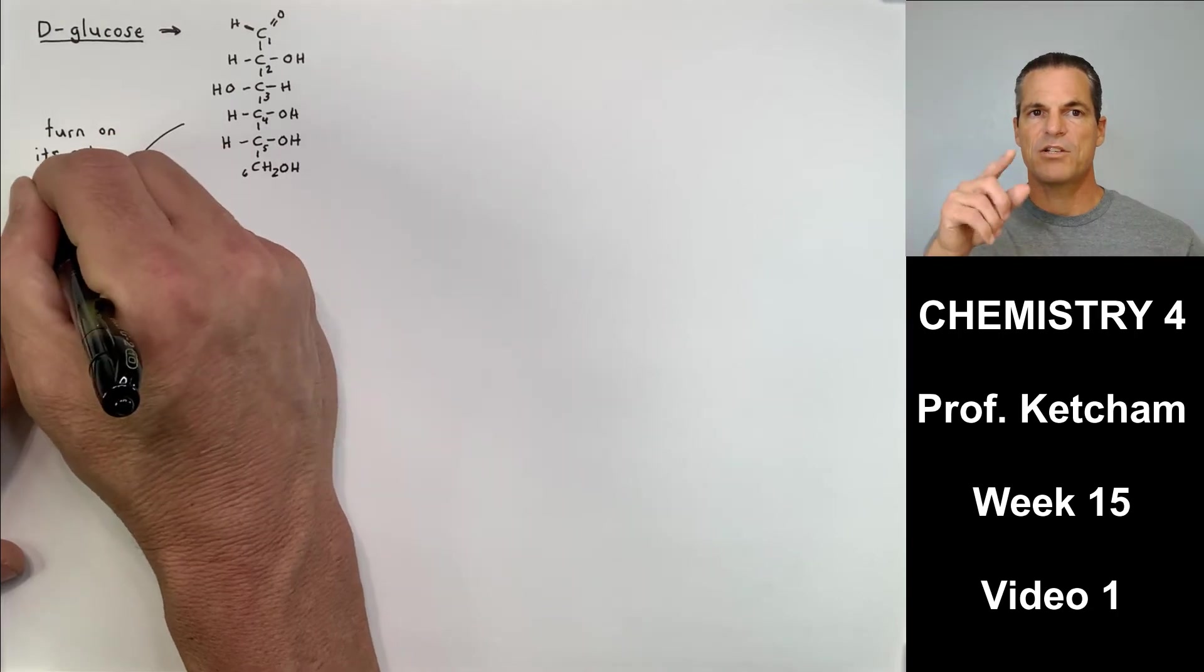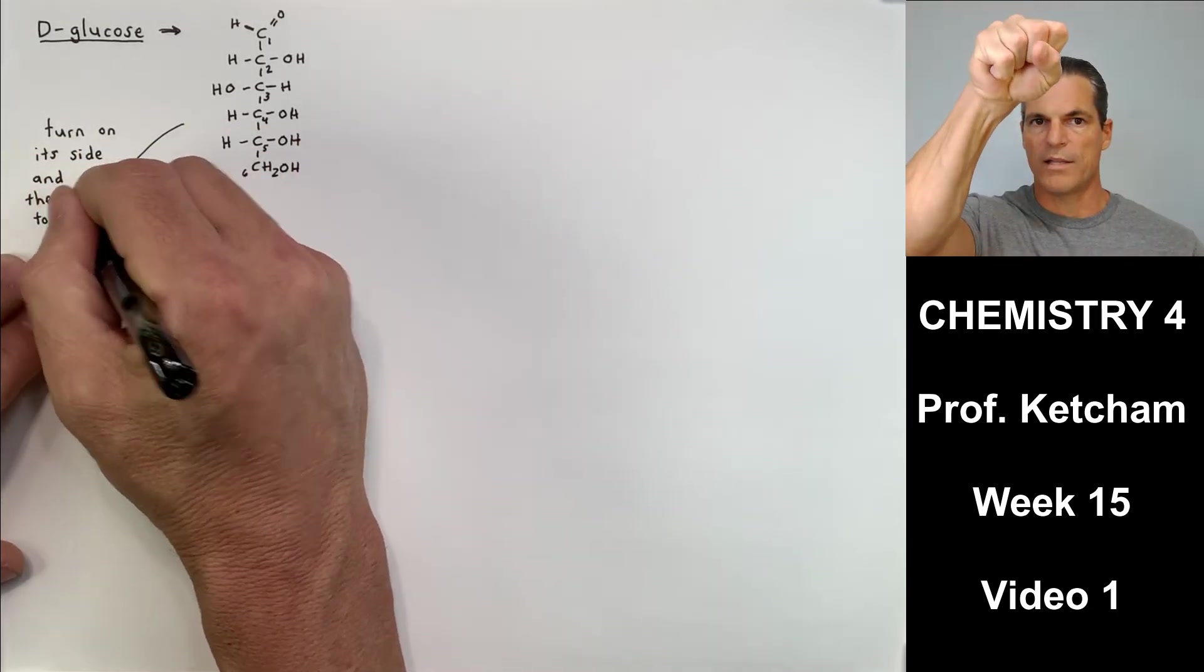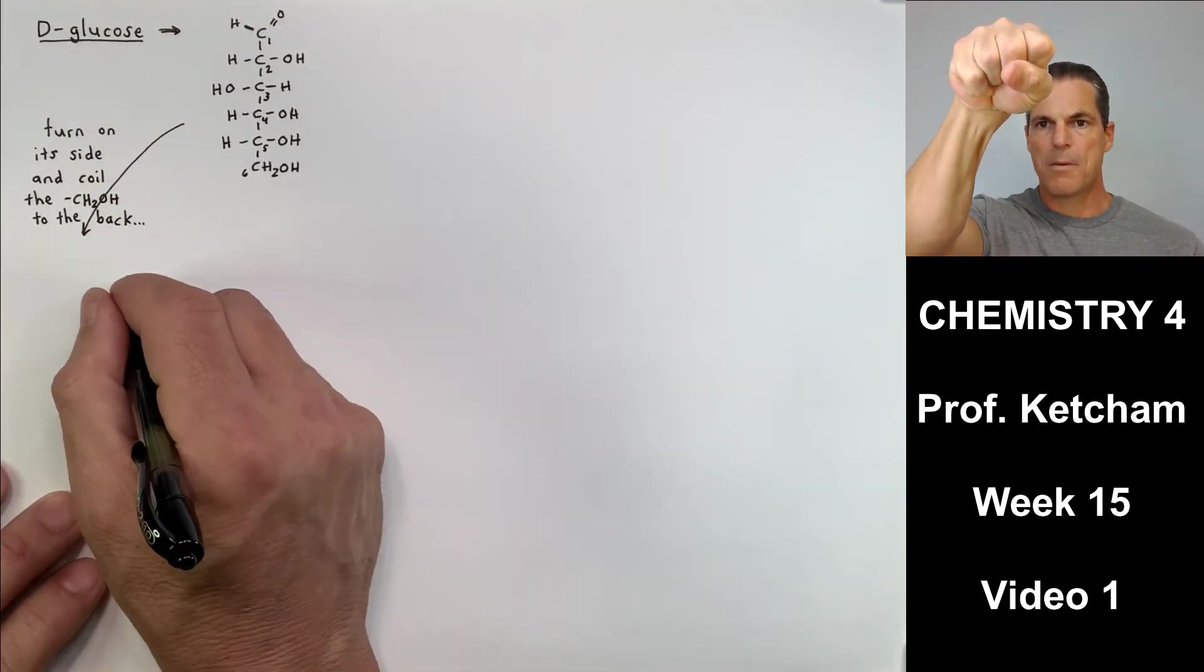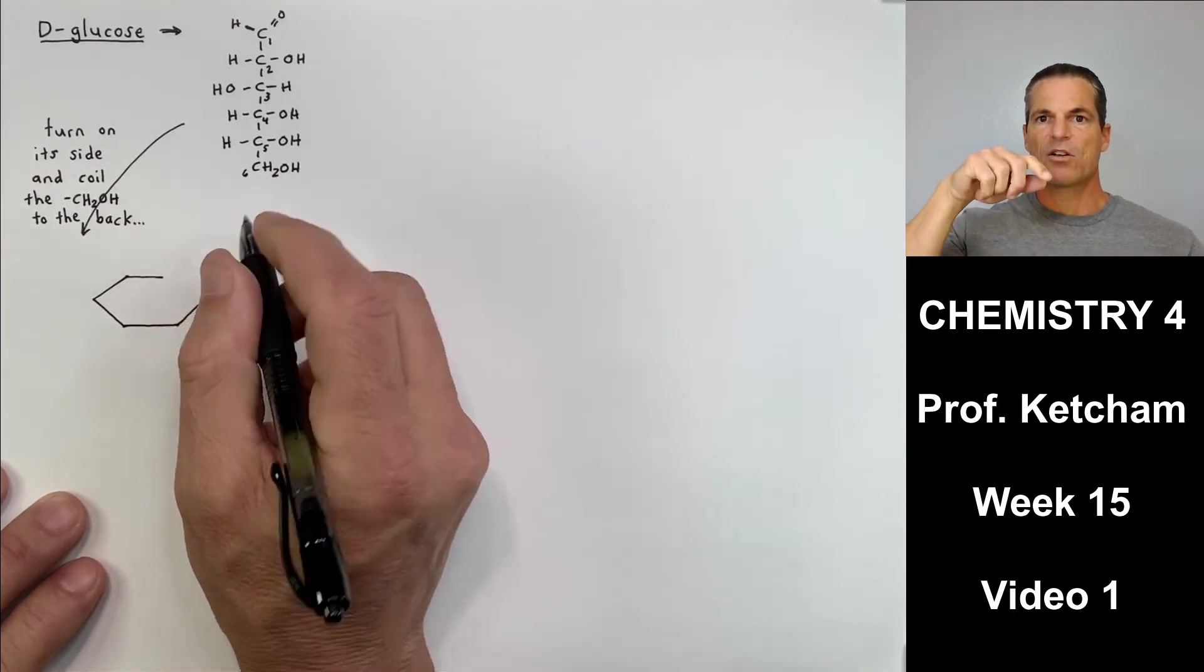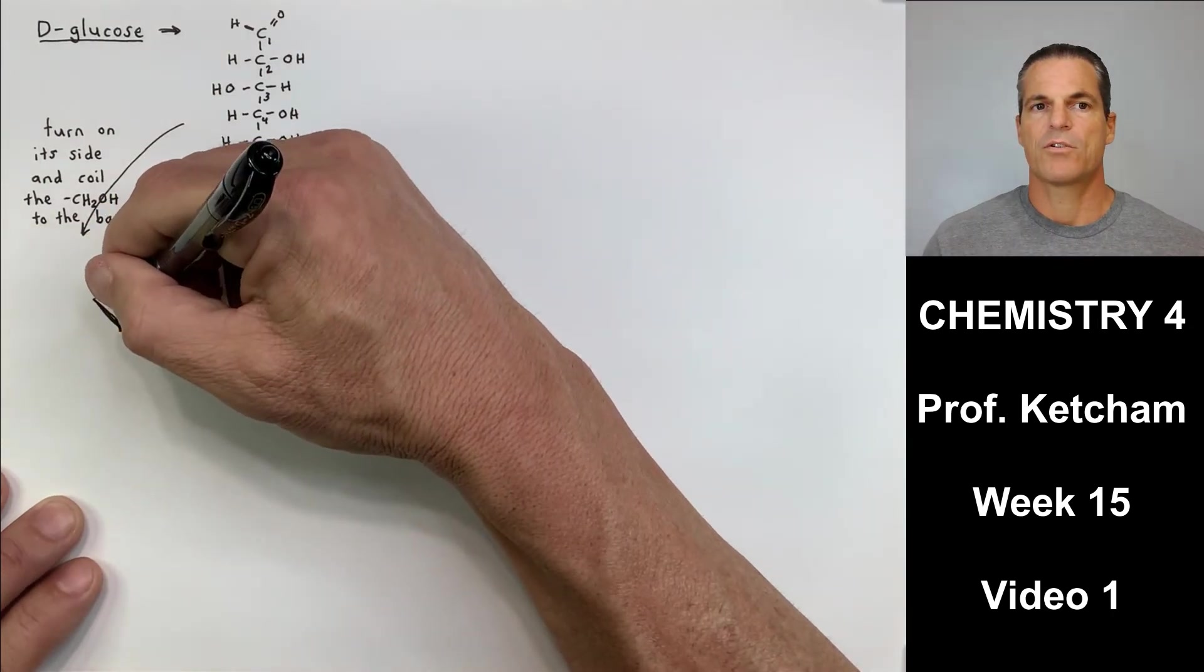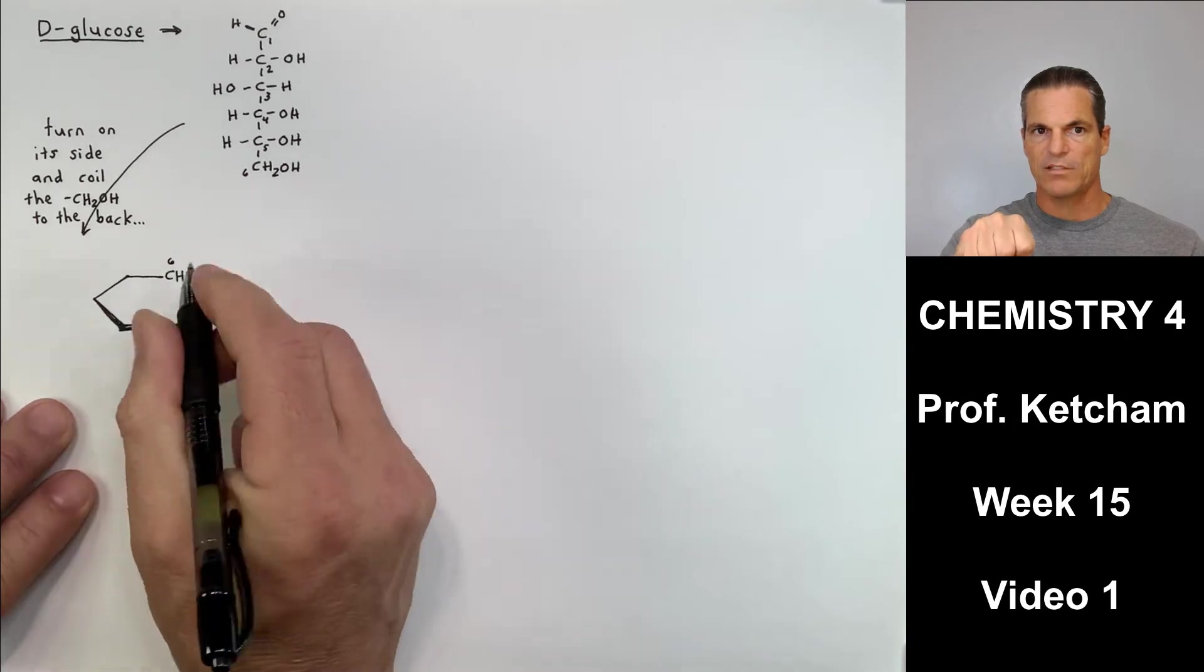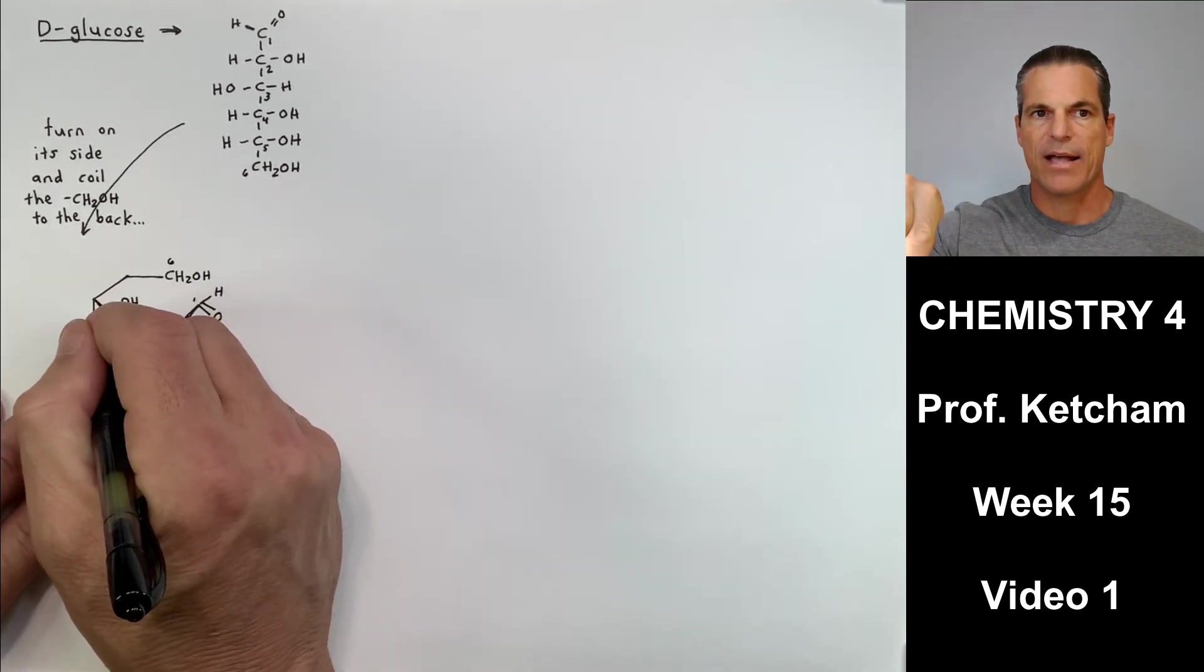Now imagine looking at this. Watch me in the video real quick. Grabbing carbon one, pulling it down towards you. Grab carbon one, pull it down towards you so it's flat, and then coil the six to the back. So I'm going to try to draw that. I've pulled carbon one down at me so it's flat, and now I'm wrapping carbon six around the back.